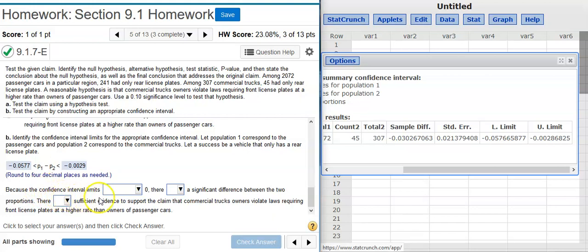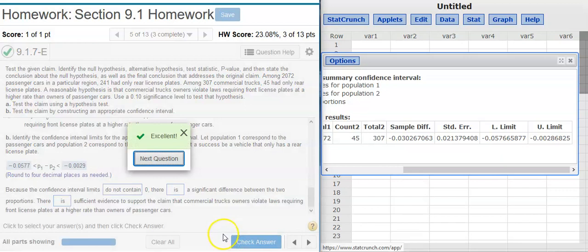So, because the confidence interval does not contain zero, okay, there is a significant difference between the two proportions. Because there's a significant difference, that means we can reject the null hypothesis, because the null hypothesis is a statement of equality. And every time we reject the null hypothesis, there is sufficient evidence. Excellent!